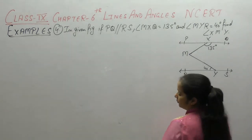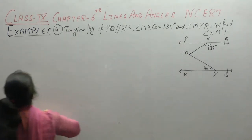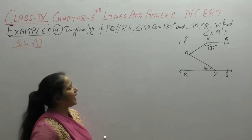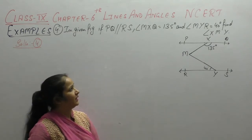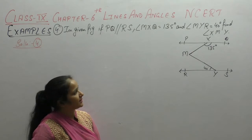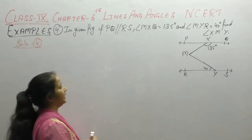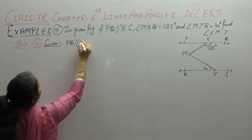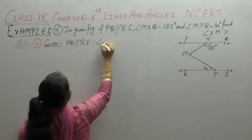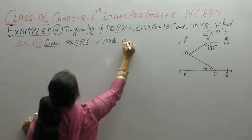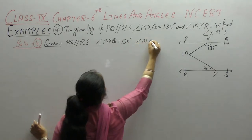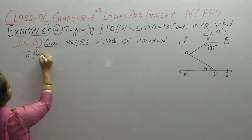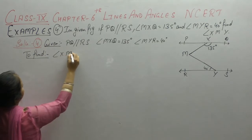Question number 4. In the given figure, if PQ parallel RS, angle MXQ is 135 degrees and angle MYR is 40 degrees, find angle XMY. Given: PQ parallel RS, angle MXQ is 135°, angle MYR is 40°. To find: angle XMY.